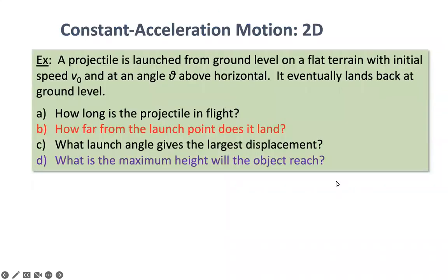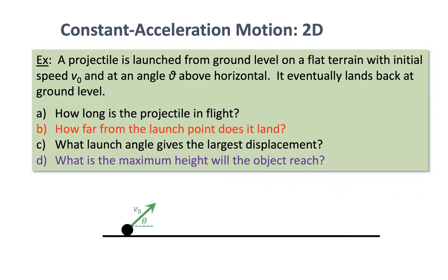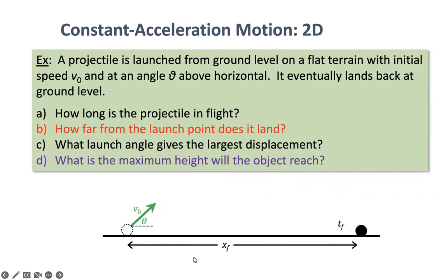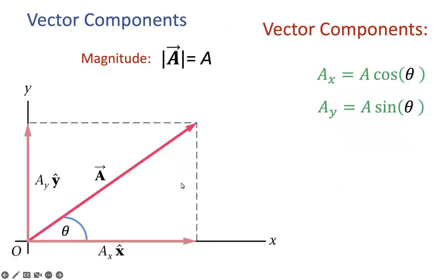Here is one example: a projectile is launched with an angle theta measured from the horizontal axis with an initial velocity v-naught. When projected, it follows a parabolic path. The problem might ask for the range — the horizontal distance — and also what is the maximum height. This is a scenario similar to what we discussed in class, where we can find the x and y components of a vector using trigonometric relationships.